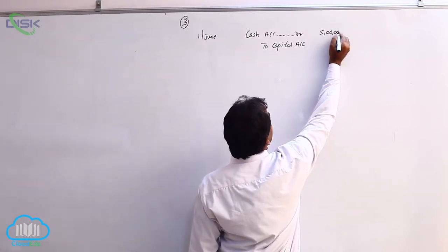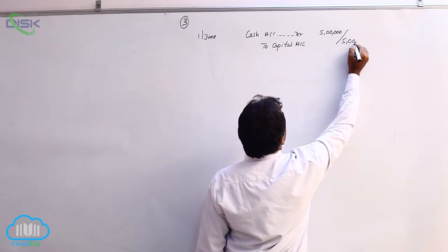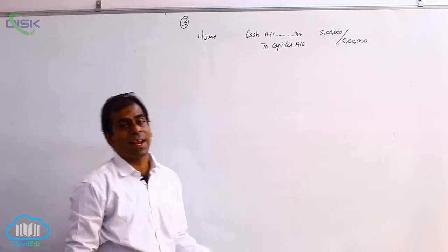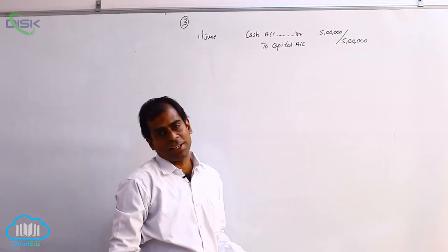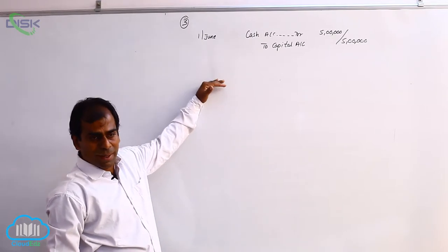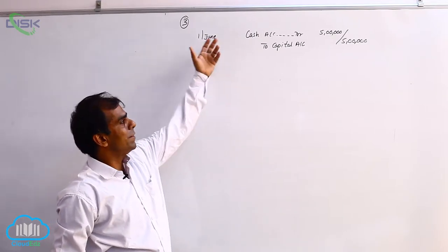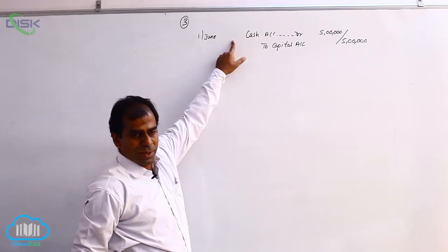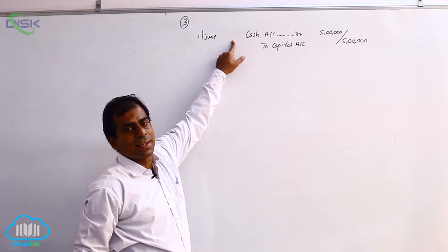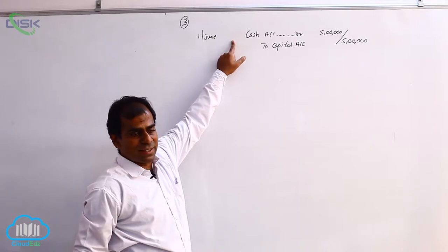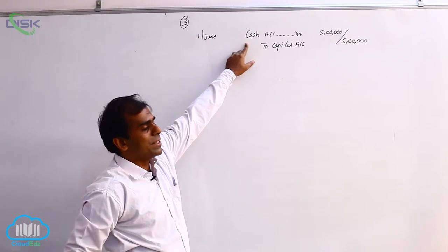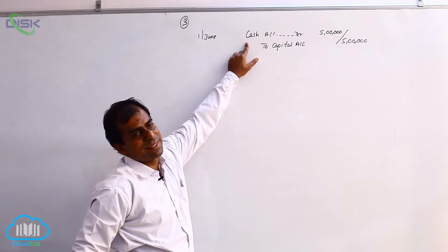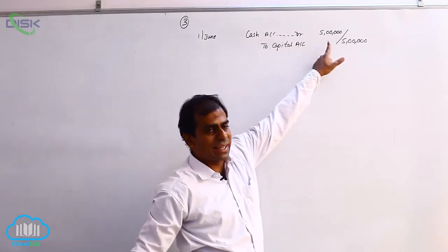Since we are familiar with this journal entry, we will discuss why we are debiting cash and why we are crediting capital. We are debiting cash because the owner is giving cash to the business, so the business is the receiver of the cash. Cash is a real account, and the real account rule is debit what comes in. So, the business is getting cash — that is why we are debiting cash.